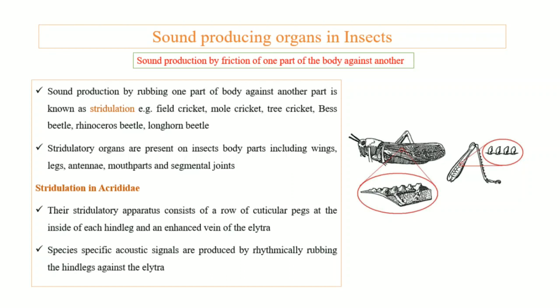Next is sound production by friction of one part of the body against another. The sound produced by friction between two body parts — rubbing one body part against another — is called stridulation. Stridulation is found mainly in field crickets, small crickets, tree crickets, bark beetles, rhinoceros beetles, and long-horn beetles.